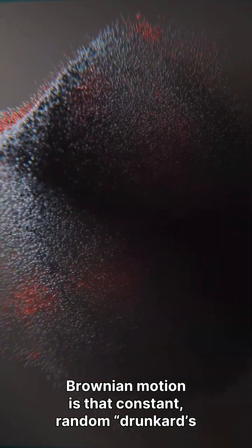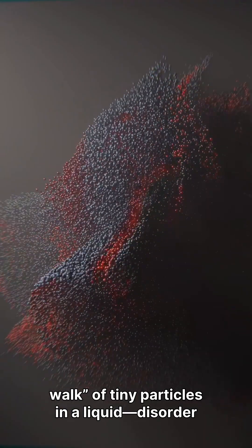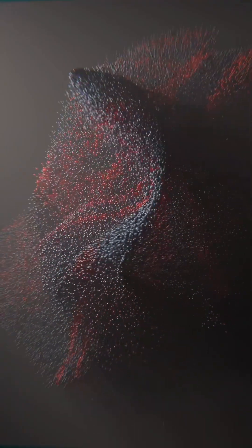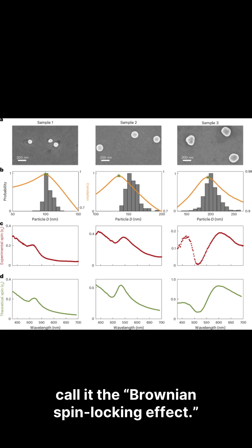Brownian motion is that constant, random, drunkard's walk of tiny particles in a liquid—disorder in space and time. And in this peer-reviewed report, Nature Materials 2025, researchers call it the Brownian spin locking effect.